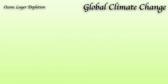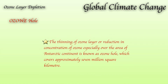The thinning of the ozone layer, or reduction in the concentration of ozone especially over the area of the Antarctic continent, is known as the ozone hole, which covers approximately seven million square kilometers.